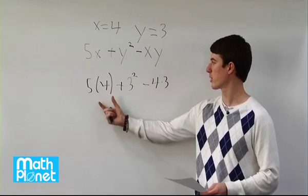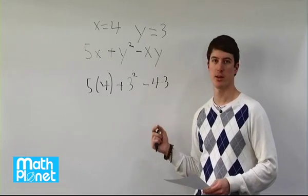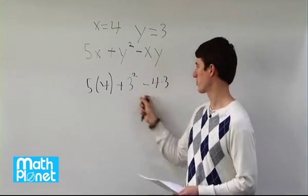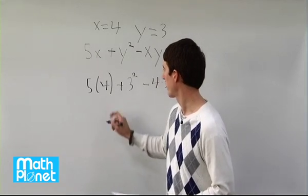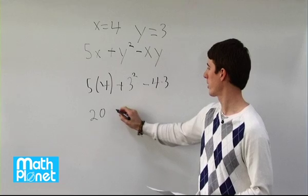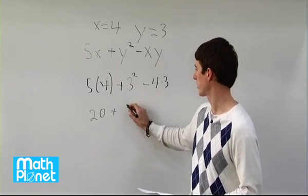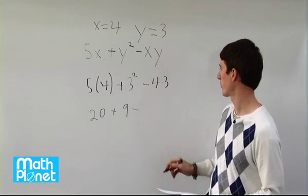So now we can just use order of operations, find these three terms individually and then add and subtract them. 5 times 4 is 20, 3 squared is 9, so 20 plus 9 minus 4 times 3. 4 times 3 is 12.